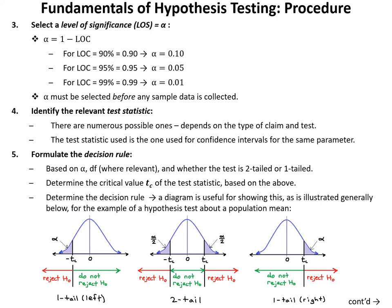For the purpose of outlining the procedure we'll use the example of a t-test. In step 5 we formulate the decision rule, based on alpha, degrees of freedom (where relevant), and whether the test is two-tailed or one-tailed. We determine the critical value — written as the test statistic with a subscript c, such as tc. Note that z is the only test statistic in this course that does not use degrees of freedom; the F-test uses two separate degrees of freedom.